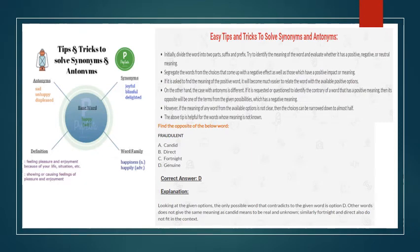Now let us see the easy tips and tricks to solve synonyms and antonyms. First of all, look at the picture there. There's a base word 'happy', which is an adjective. Let us see its antonyms: sad, unhappy, displeased. Synonyms: joyful, blissful, delighted.